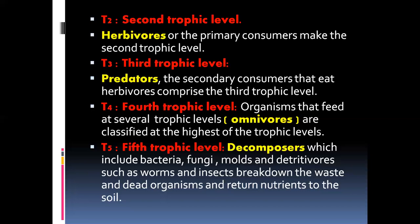T4 is the fourth trophic level — organisms that feed at several trophic levels. These are the omnivores, classified at the highest of the trophic levels. Omnivores are animals that can feed on both plants and other animals as their food source, and this is relatively the highest trophic level in the ecosystem.